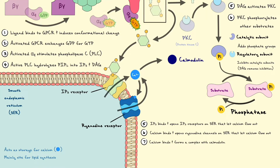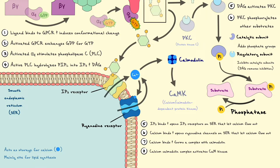Moreover, calcium can bind to the small cytoplasmic protein calmodulin. The calcium-calmodulin complex then activates the calcium-calmodulin dependent kinase, also commonly referred to as CAMK. Like the other kinases we've discussed, CAMK goes on to phosphorylate other substrates, including ion channels, vesicle proteins, transcription factors, and so on.